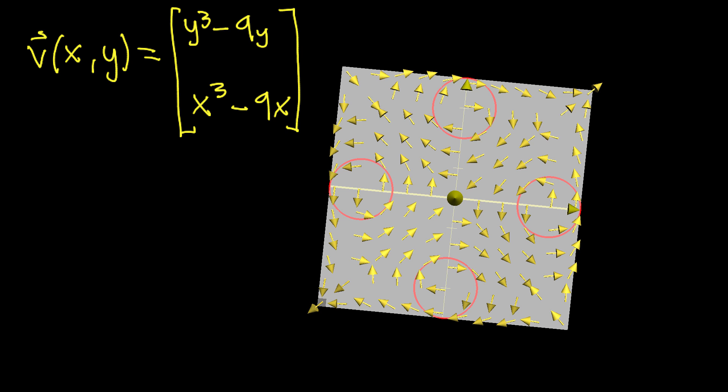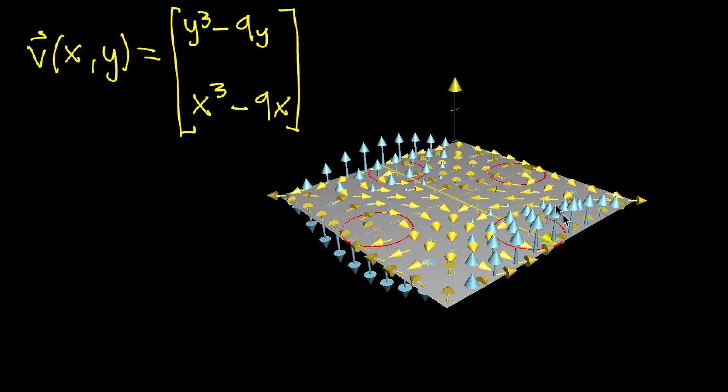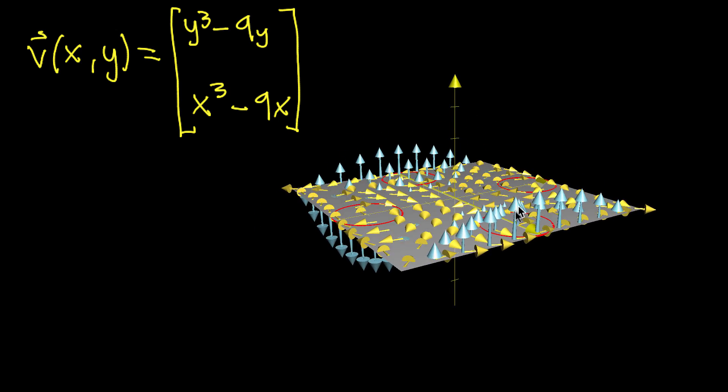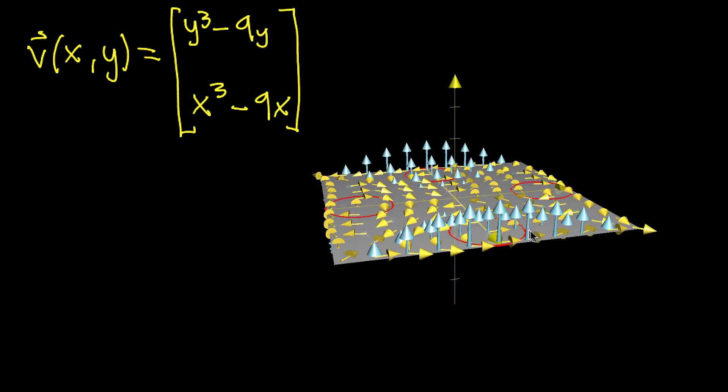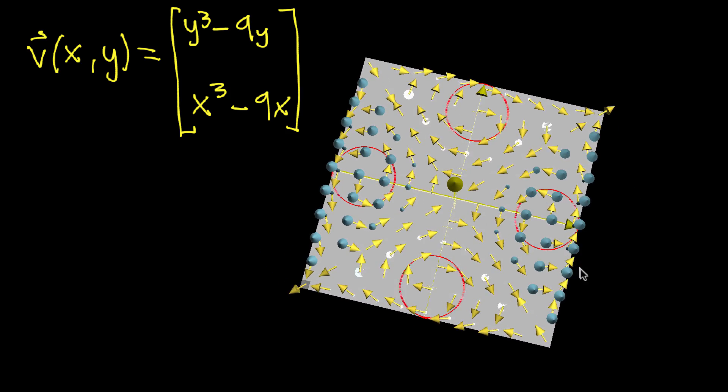So if we do that here, and if we imagine curling your right fingers around there and sticking up your thumb, you're going to get vectors that point in the positive z direction. So this is why in that region you have vectors pointing up positively in the z direction. They're telling you that as you view this x-y plane from above, there's counter-clockwise rotation.